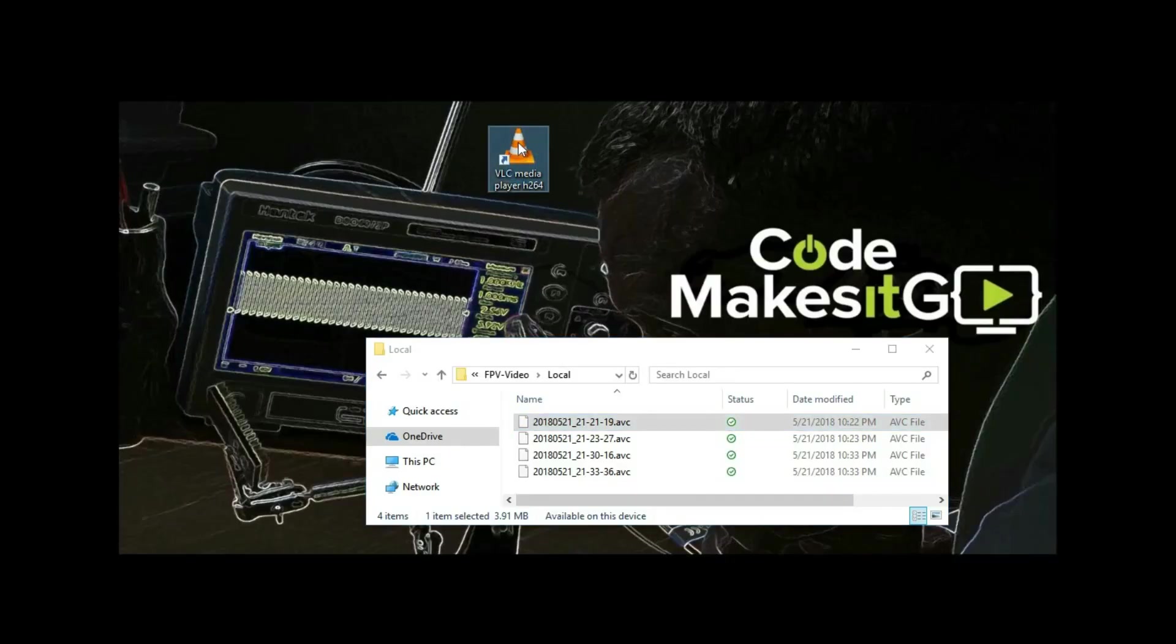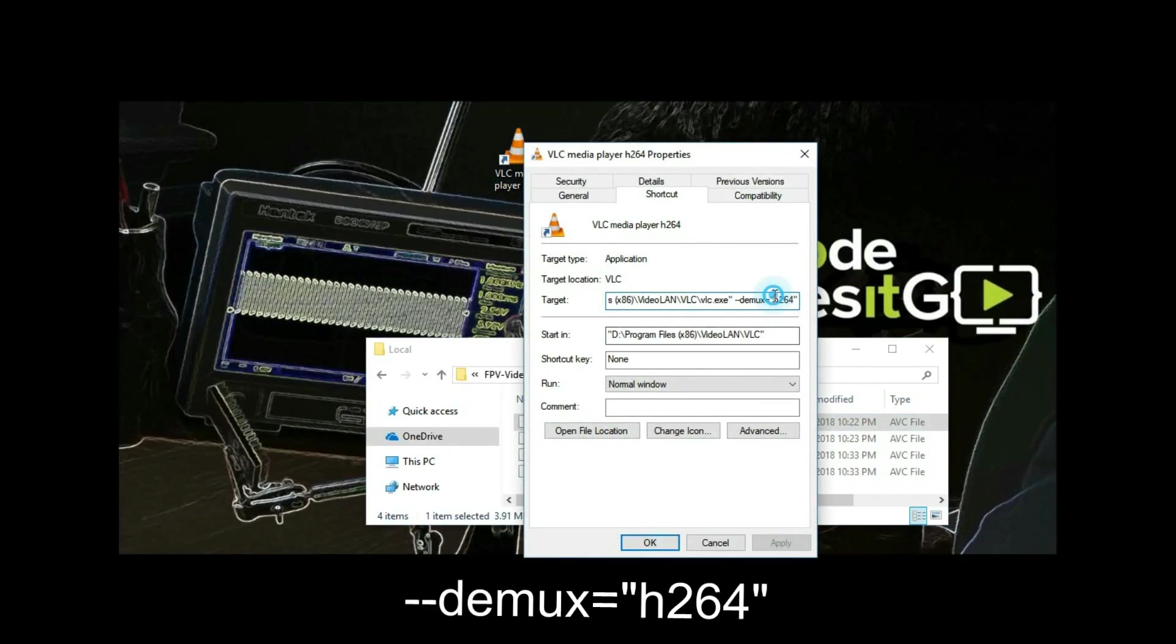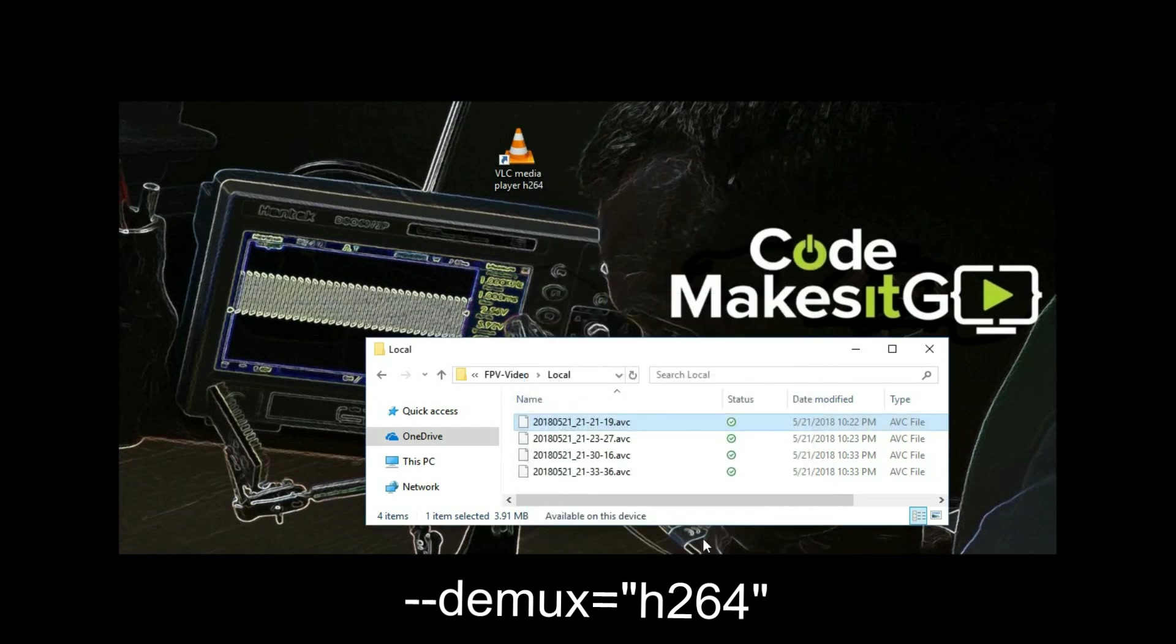If you're wondering how I'm playing the videos on the controller, I'm using VLC with a special tag in the shortcut that says DMUX equals H264. Then all you have to do is drag and drop and it plays.